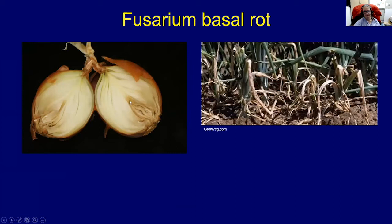The above-ground symptoms are very nonspecific — they could apply to several other diseases and some insect damage as well. So it's important to pull out a symptomatic onion, look on the bottom, and see if there are no roots. If there are no roots, you might want to use a strong hand lens and look for bulb mites.